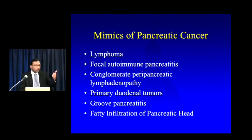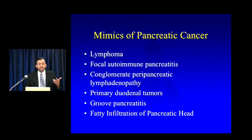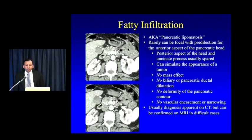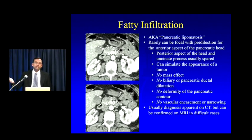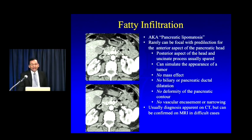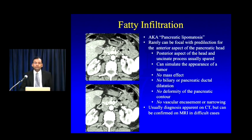The major mimics to consider in daily practice are: lymphoma, focal autoimmune pancreatitis, peripancreatic lymphadenopathy from another primary, duodenal tumors, groove pancreatitis, and fatty infiltration of the pancreatic head. Of all of these, the one I see all the time is fatty infiltration of the pancreatic head — also known as pancreatic lipomatosis. I've seen countless cases billed as pancreatic cancer that turned out to be focal fat.